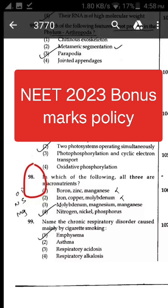For Section B, candidates need to attempt any 10 questions out of 15 questions given. In the event of a candidate having attempted more than 10 questions, only the first 10 attempted questions will be considered for evaluation. There will also be negative marking for Section B.